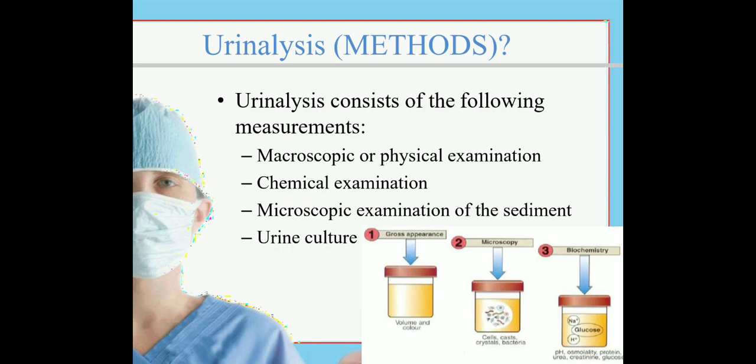In physical examination we examine the gross appearance — volume, color, and odor. In microscopy we examine cells, casts, crystals, and bacteria. In chemical examination we measure pH, osmolality, protein, urea, creatinine, and glucose.